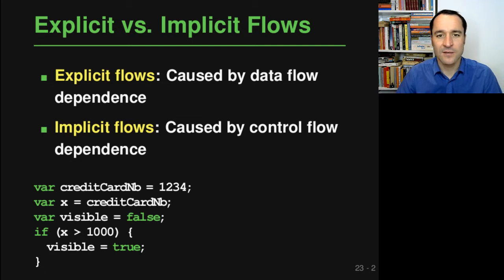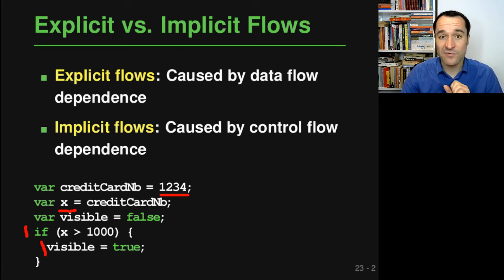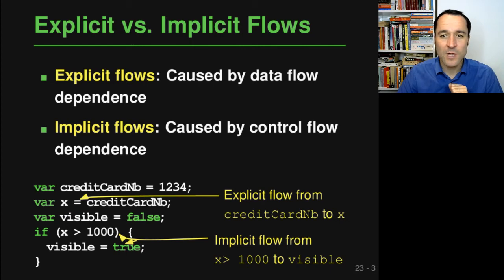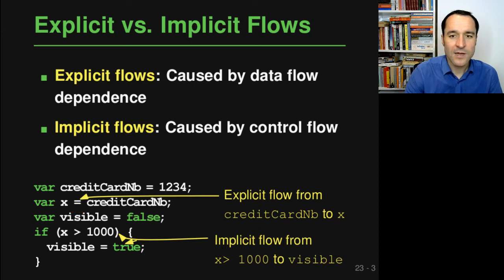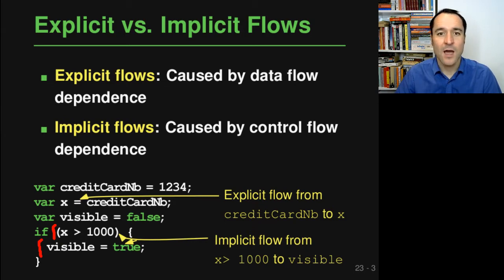Looking at the credit card example again: secret information is assigned to a variable, which is used in a conditional check, and if the condition is true, something is assigned to the variable 'visible'. This example has both explicit and implicit flows. There is an explicit flow at the assignment because there is a data flow from credit card number to variable x. There is also an implicit flow in the conditional, which depends on the secret variable and determines whether a statement executes — a control flow dependency.